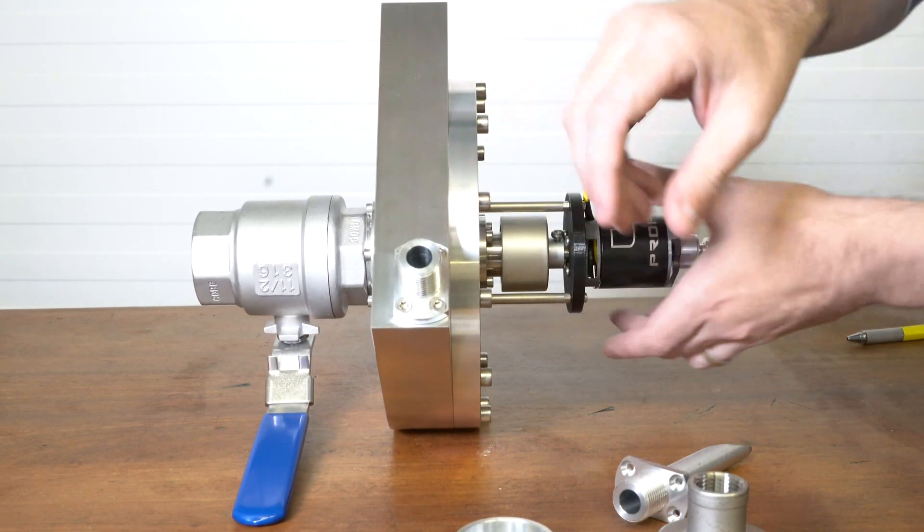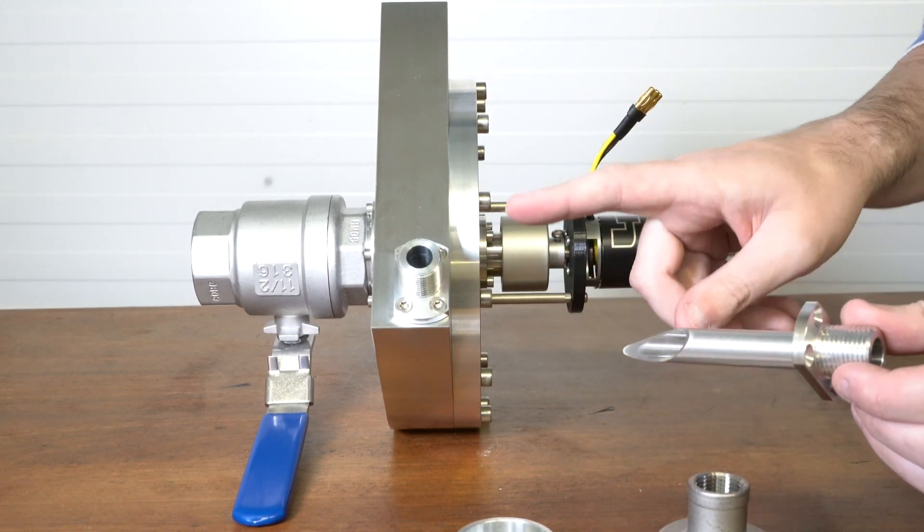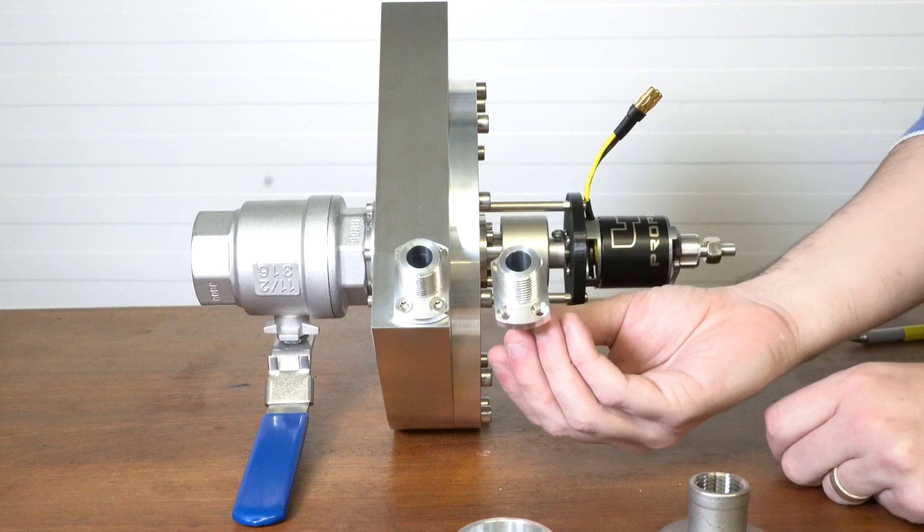We've also got the nozzle, and this is what the nozzle looks like. Basically there's a hole that goes into the turbine, and this sits like so.